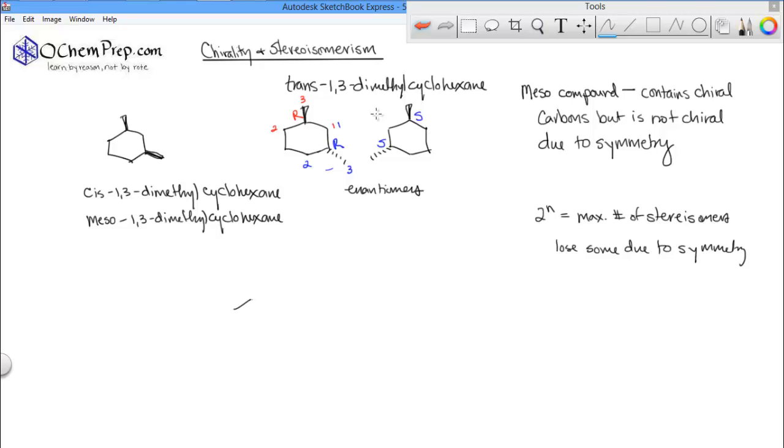Now, if we look at the 1,4, either cis or trans, so here is 1,4, either cis or trans. Let's look and try to decide, are these meso-compounds? Well, they do have a plane of symmetry.